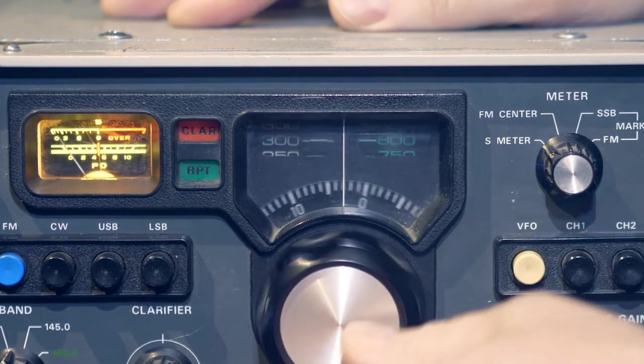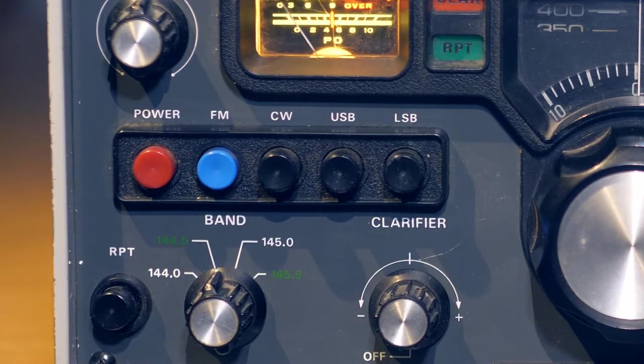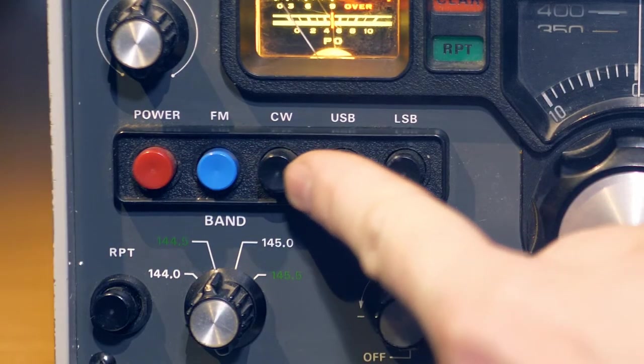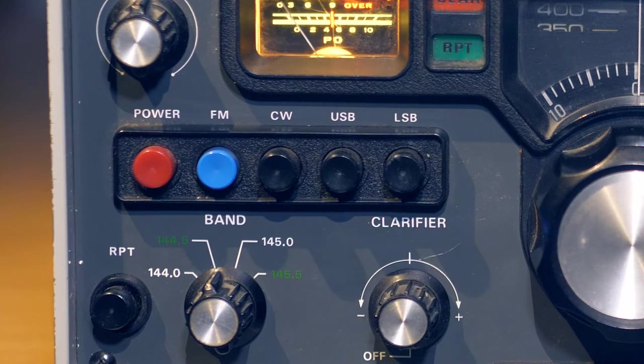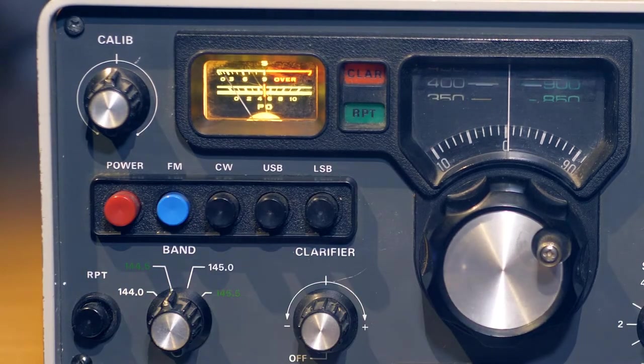Operating modes, that is, types of modulation, are switched by buttons. There are four buttons on the front panel, one of them is blue. This is a standard button, it should be blue. This is the frequency modulation button. Next to it are three buttons for turning on single sideband modulation and telegraph, and on the very left there is still a red button, it's just a power button for the entire transceiver.